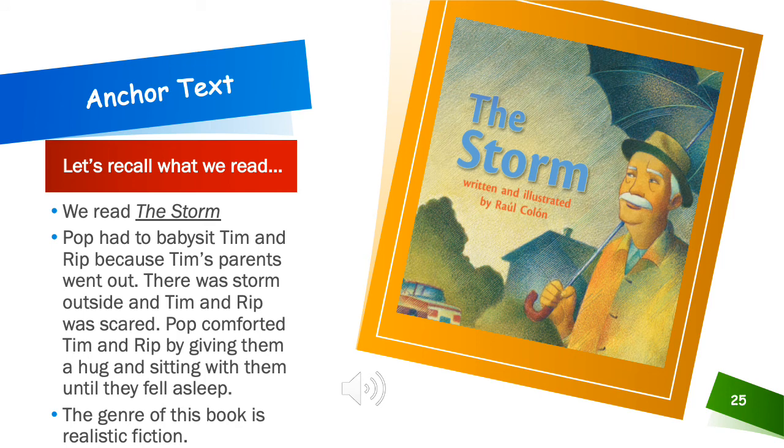So let's recall or remind ourselves what we read in the story, The Storm. The Storm is about Pop, who had to babysit Tim and Rip because Tim's parents went out for the evening. There was a storm outside, and Tim and Rip were scared. Remember how they hid under the covers when they saw the lightning and the thunderstorm? Then Pop had to comfort Tim and Rip by giving them a hug and sitting with them until they fell asleep.